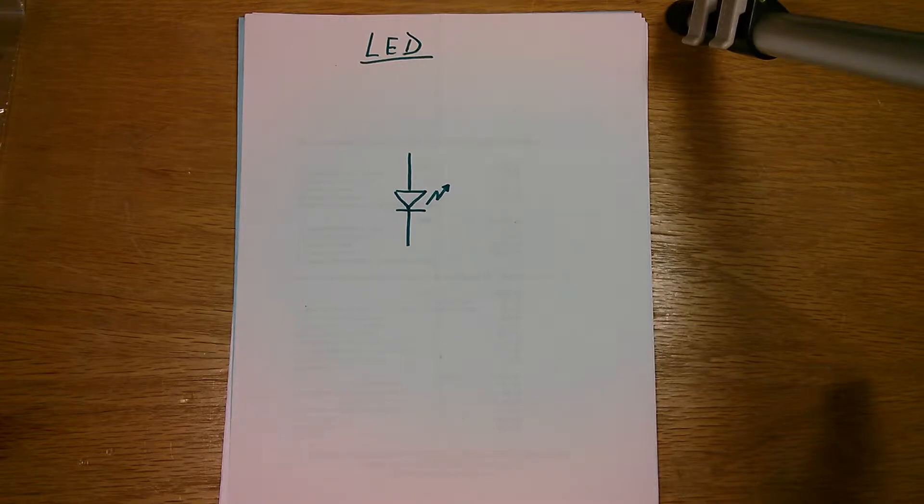Now you cannot drive these diodes directly off of an Arduino for example. An Arduino produces a 5 volts output on the IO pin if you remember from a previous tutorial.